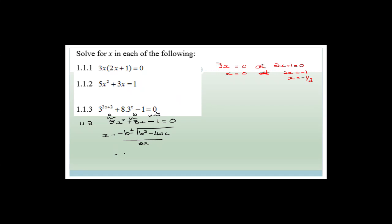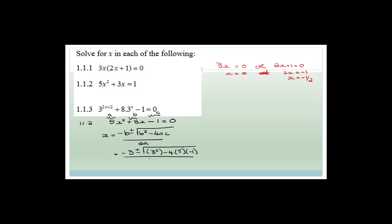Substituting in, we've got x equals minus 3 plus or minus the square root of b squared, which is 3 squared, minus 4 times a, which is 5, times negative 1, all over 2 times 5. That gives us minus 3 plus or minus the square root of 9 plus 20, all over 10. Therefore x is equal to minus 3 plus or minus the square root of 29, all over 10.